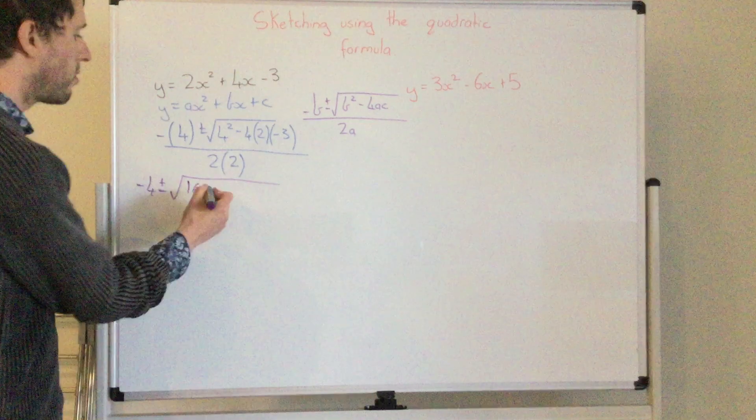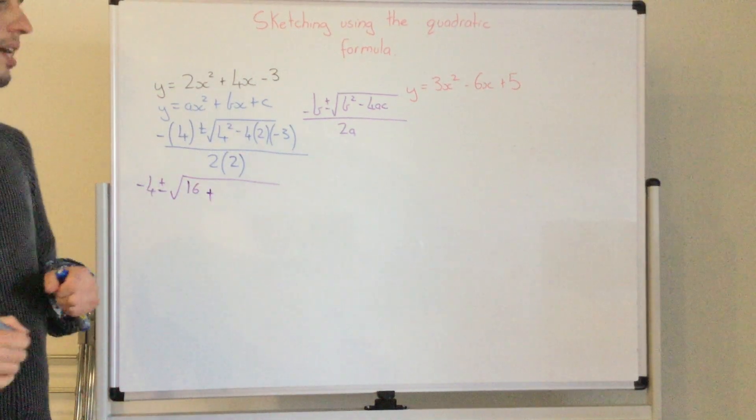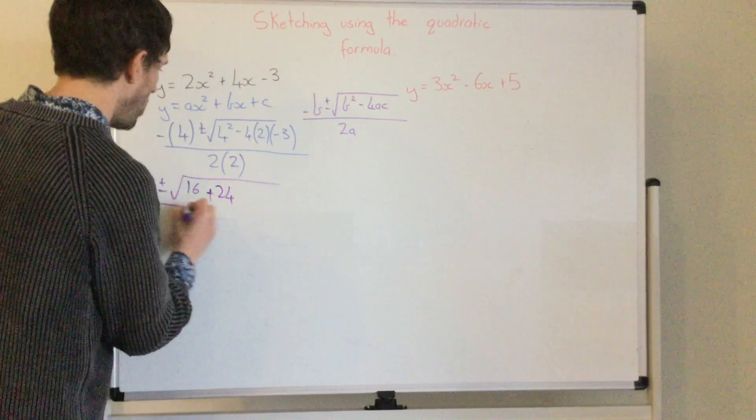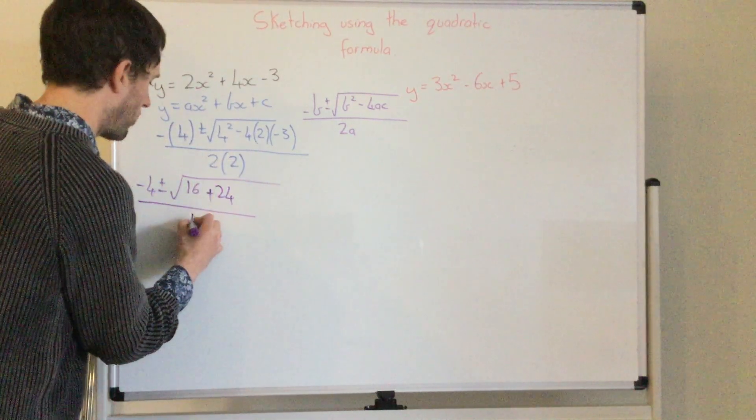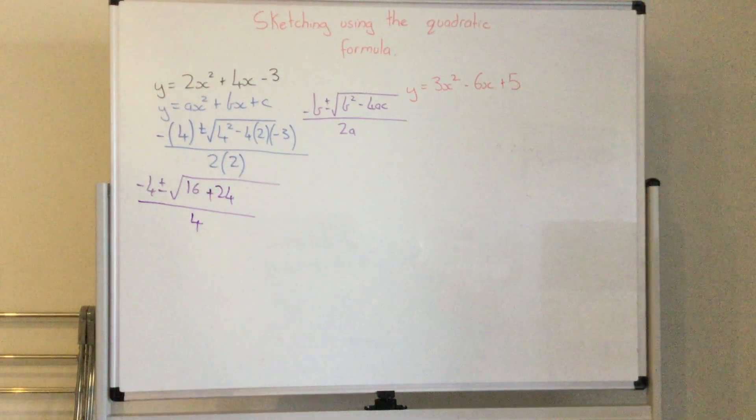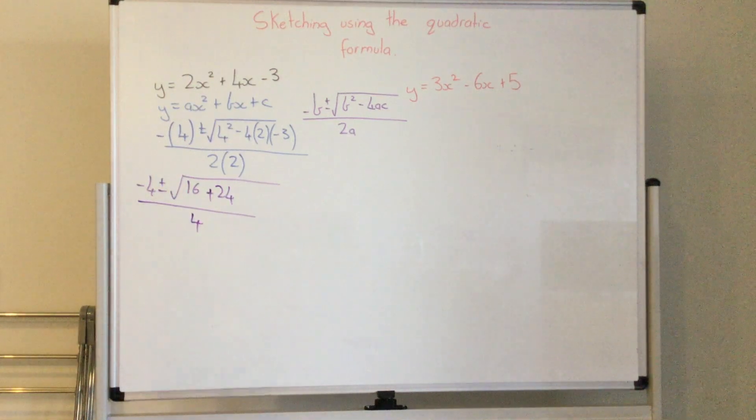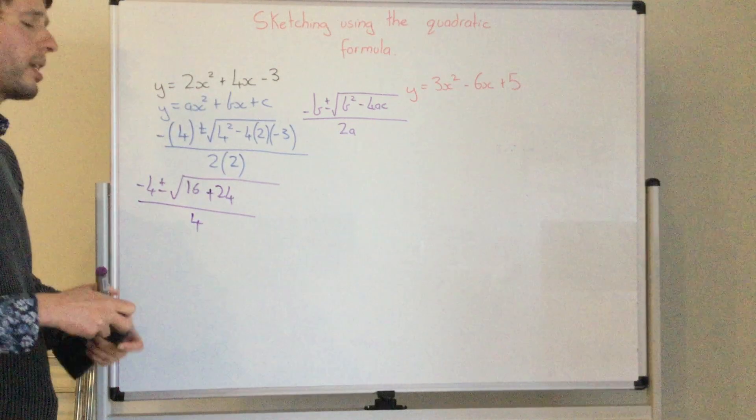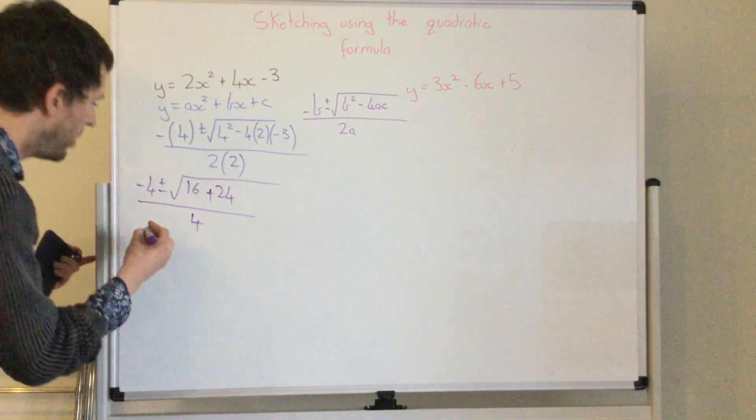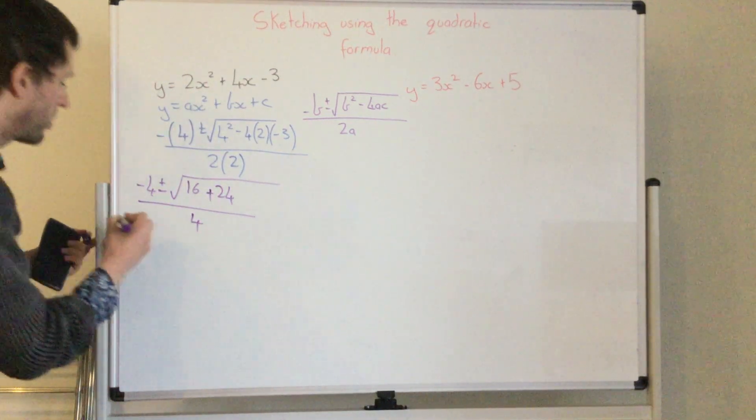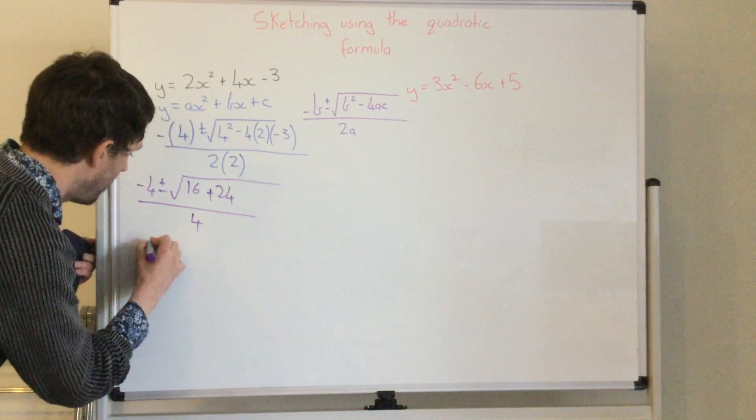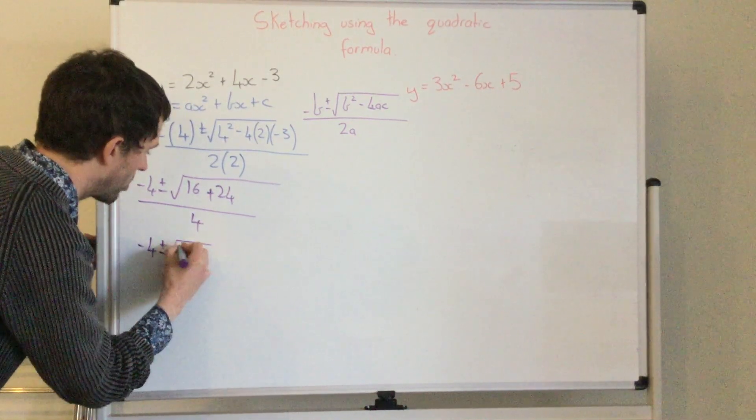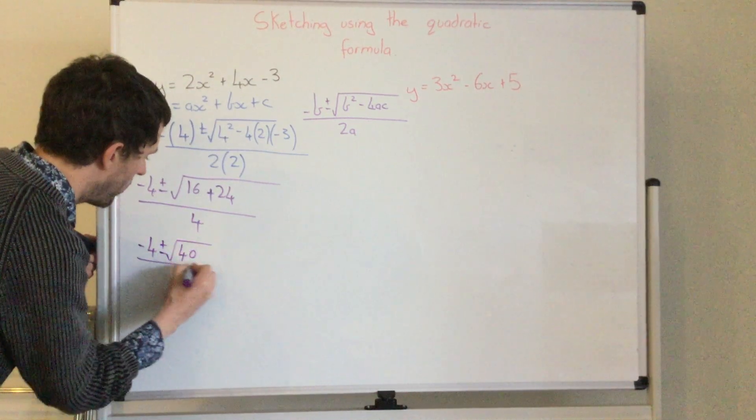Then negative and negative equals a positive. So it will be 8 times 3, 24. Over 2 times 2 equals 4. I'm going to get my calculator. So we're doing 16 plus 24, that equals 40. So I'm going to have two answers.